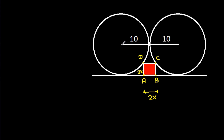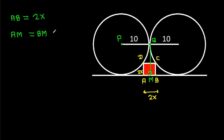Now suppose the center of this circle is p, and suppose this point is q. From q, if we draw a perpendicular on ab, suppose this point is m. Then ab is 2x, and am equals bm equals ab/2 by symmetry.